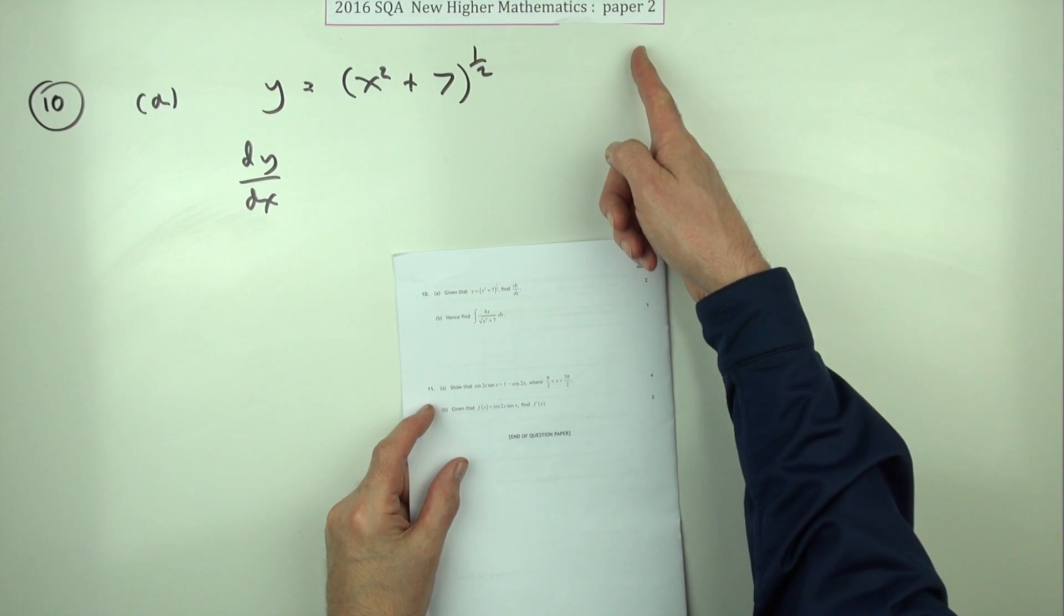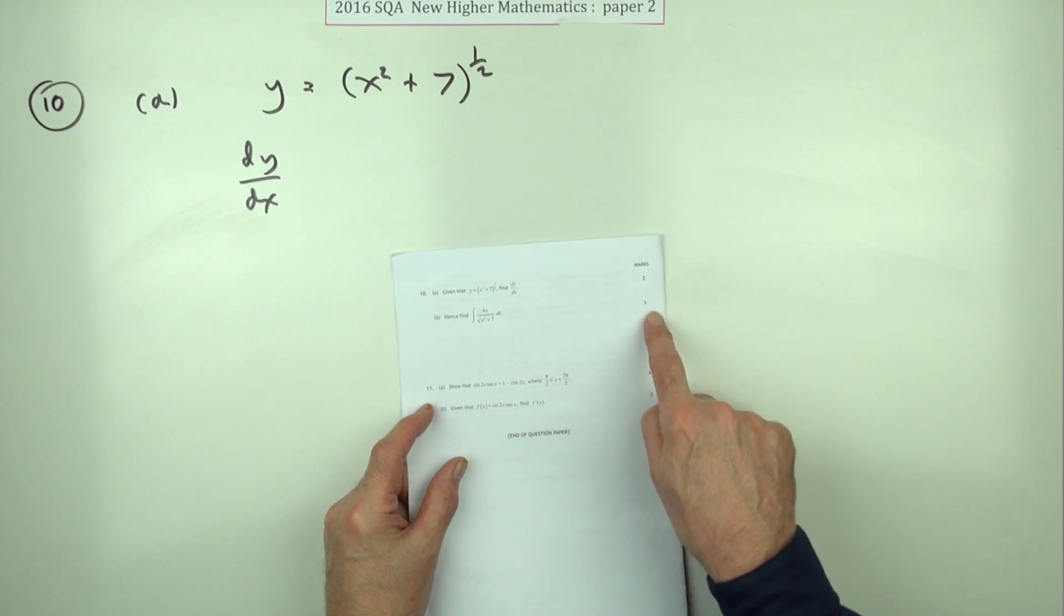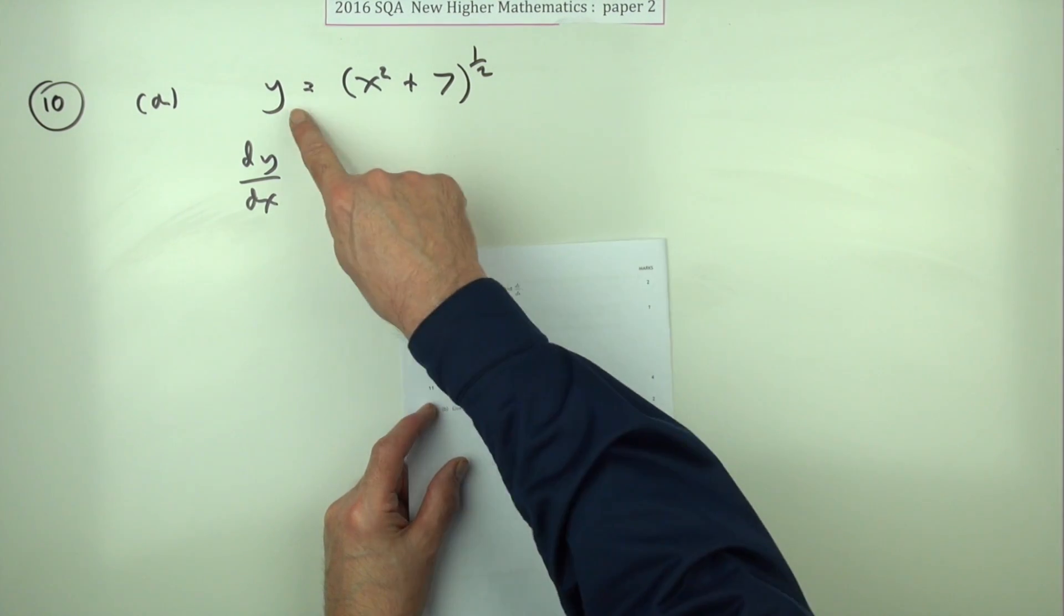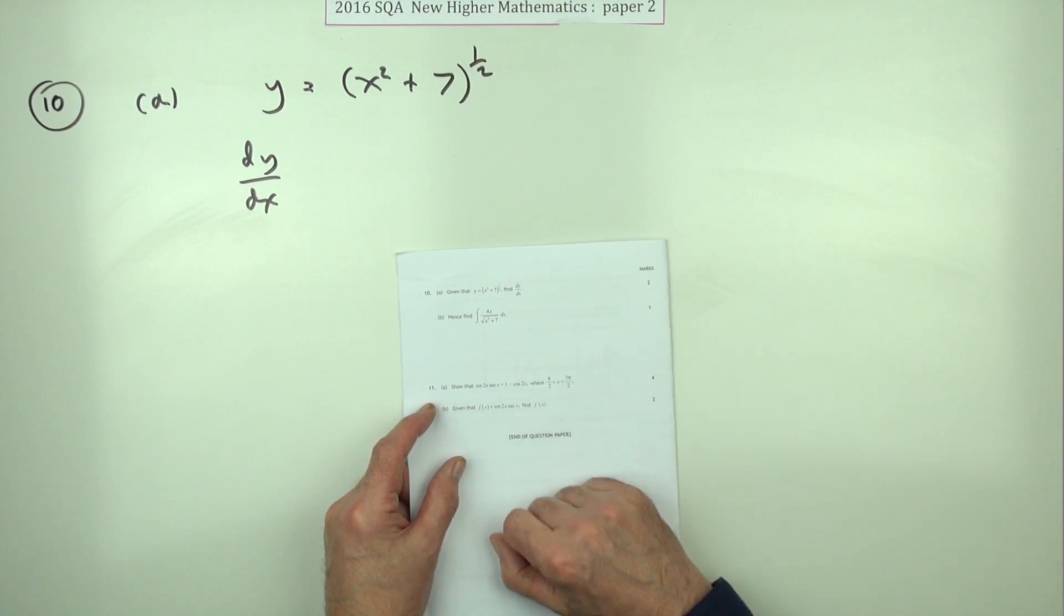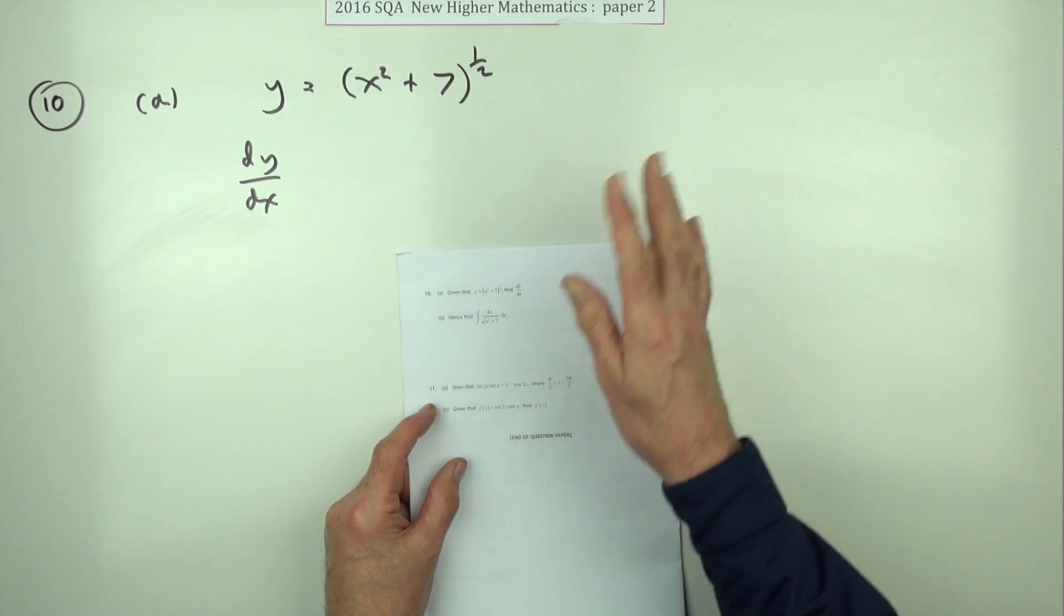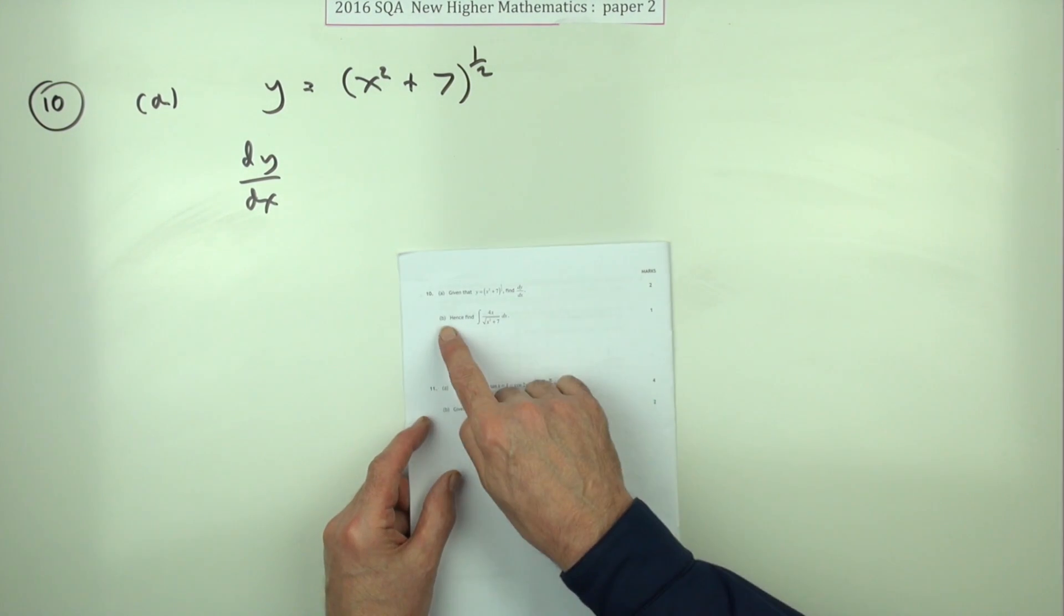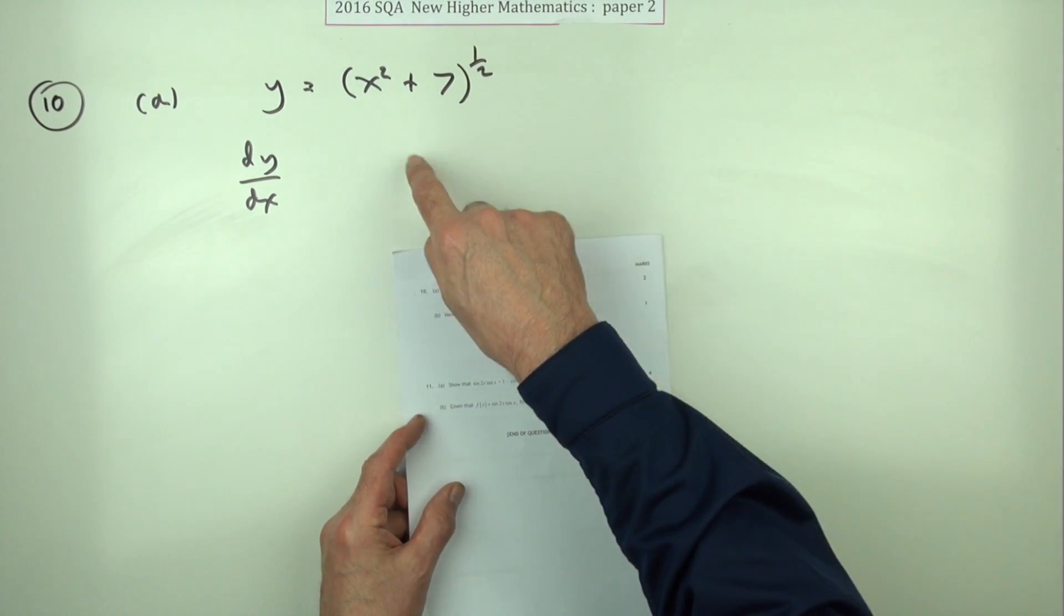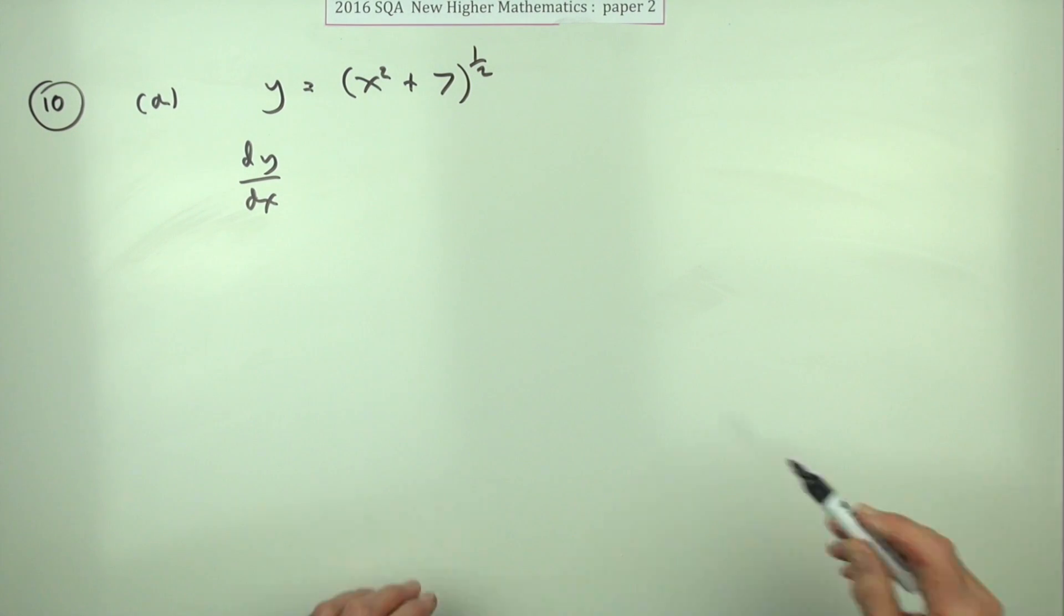Number 10 from paper 2 of the 2006 Higher Maths. Just a three mark question here. Given this expression for y, find the derivative. Two marks there. Function of a function. And then part b for just one mark, something that presumably is related to it. But first of all, find what's this derivative.